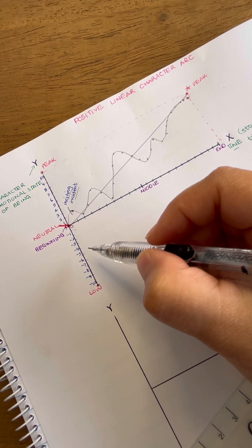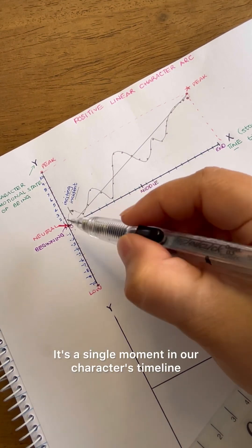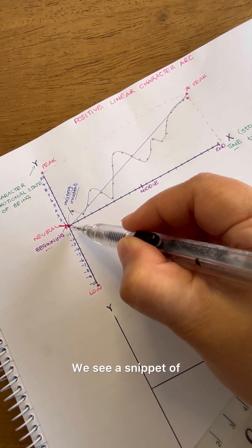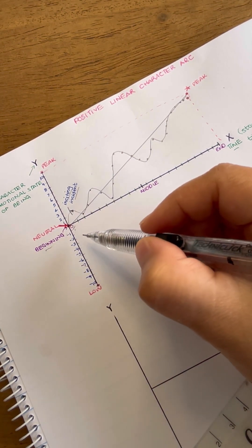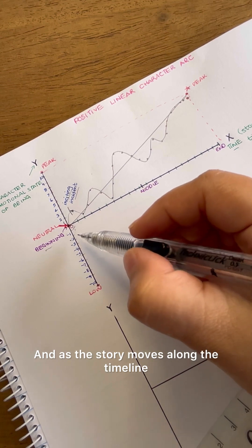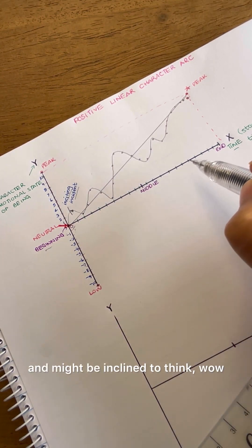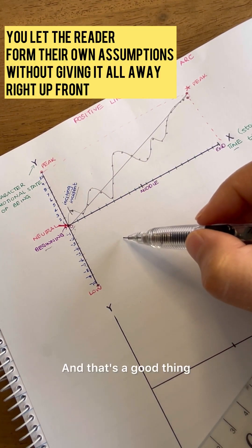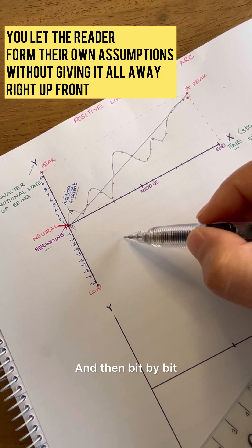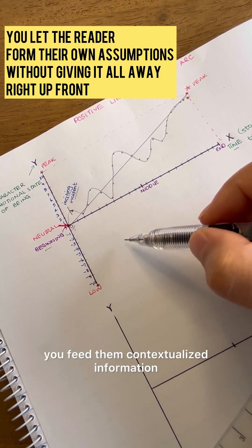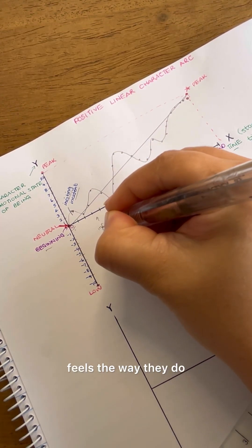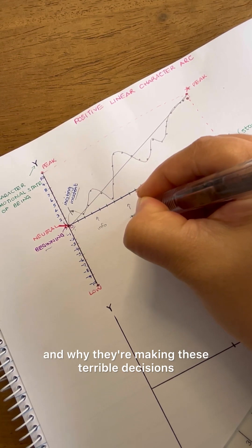But this is a snapshot. It's a single moment in our character's timeline. Specifically, this is point zero. We see a snippet of who our character is at the start. And as the story moves along the timeline, we look at their decisions and might be inclined to think, wow, I would have never done that. That's really stupid. And that's a good thing because you're letting the reader see a perfect picture through the window. And then bit by bit, you feed them contextualized information that allows them to understand why the character feels the way they do and why they're making these terrible decisions.